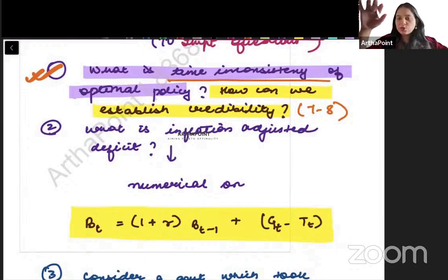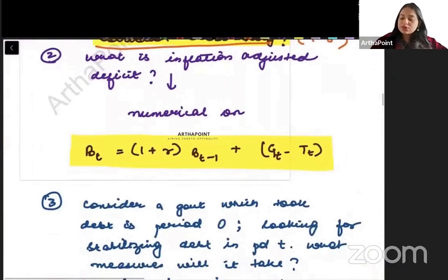it talks about the time inconsistency theory of optimal policy. Hostage taking only in the book it is given. So you will go ahead and write that answer and also you will talk about credibility. There are few pointers given how you can establish credibility. Try to write down all those points very well.